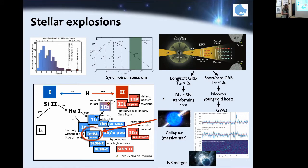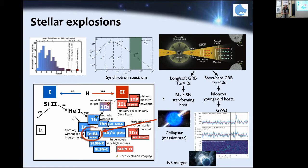Short GRBs — also called soft and short because of the shape of their high-energy radiation — produce an event called a kilonova, a kind of dim supernova. They are found in all kinds of host galaxies. The smoking gun was that we detected a gamma-ray burst coincident with a gravitational wave signal in August 2017.